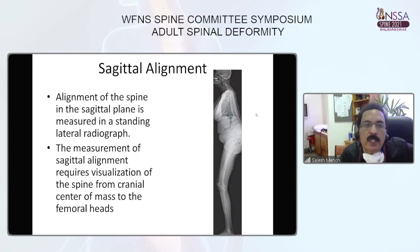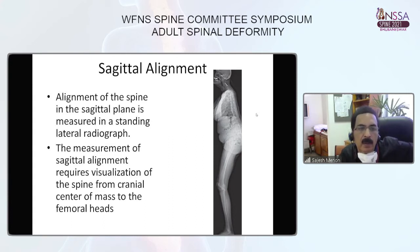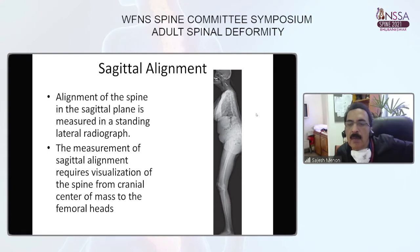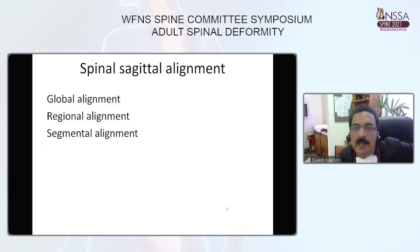For measurement of sagittal alignment, the alignment of the spine is measured on a standing radiograph. The measurement requires visualization of the spine from the cranial center of mass to the femoral heads. If possible, the lower limb should also be included to assess compensatory mechanisms such as knee flexion, as seen in this X-ray.